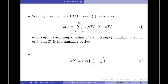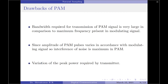That is about the discussion on pulse amplitude modulation. Before I end this video, I would also like to highlight some drawbacks of the pulse amplitude modulation technique. First, the bandwidth required for transmission of PAM signals is quite high, though this can be compensated by replacing the rectangular pulse with a standard pulse. Then, since the amplitude of PAM signals can take any value in the modulated signal, interference of noise for PAM signals is quite high. Lastly, the variation of peak power required by the transmitter is also one of the drawbacks of the PAM technique.